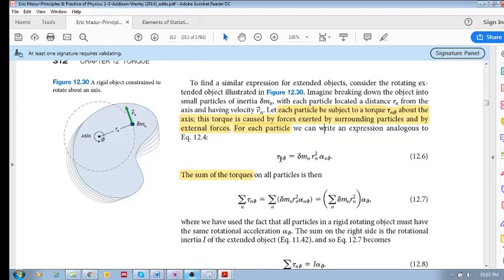The torque of particle n is equal to—remember, we looked at this for a particle in the previous section, it was m*r²*alpha—but now the inertia for this little particle is delta m for particle n, and r_n is squared, and then we also have alpha_n. Now, if